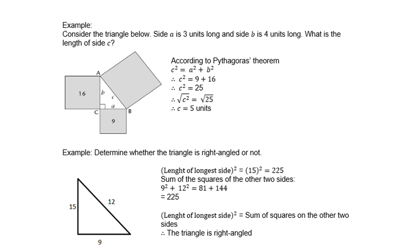Another example: determine whether the triangle is right-angled or not. The angle is not given as 90°, but you must prove that if the square on one side equals the sum of the squares on the other two sides, then that angle will be 90°. Looking at sides 15, 9, and 12: 15 squared is 225, 9 squared is 81, and 12 squared is 144. Checking: 9 squared plus 12 squared equals 81 plus 144, which is 225. The length of the longer side squared equals the sum of squares on the other two sides, so the triangle is right-angled.